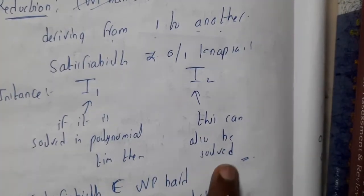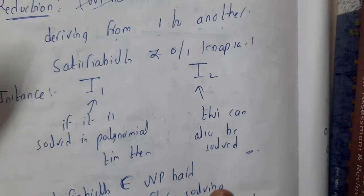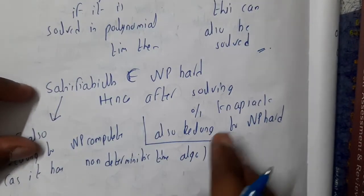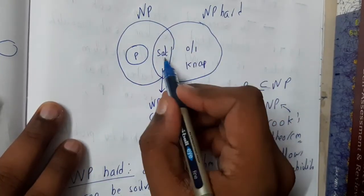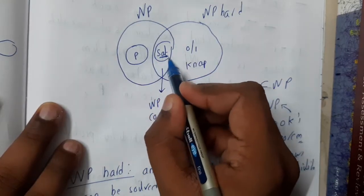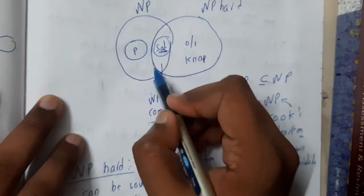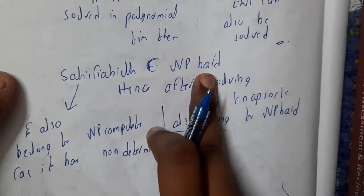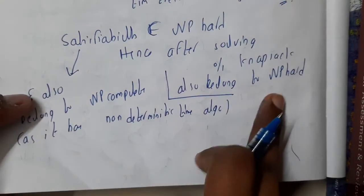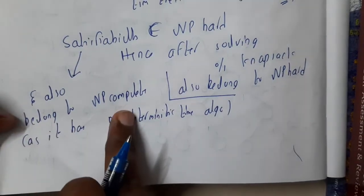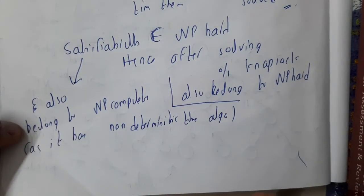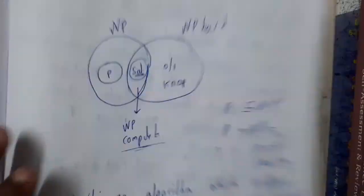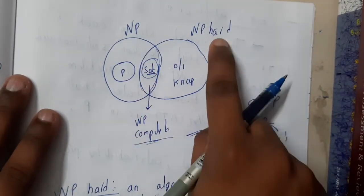Satisfiability belongs to NP. Hence we can say that 0/1 knapsack also belongs to NP-hard. Satisfiability also belongs to NP-complete as it is a non-deterministic algorithm — there is no definitive solution; you assume by doing certain steps you will get the answer. I'll be showing you a graph: satisfiability sits in between NP and NP-hard, which is why the satisfiability problem comes under NP-complete — the intersection of NP and NP-hard.